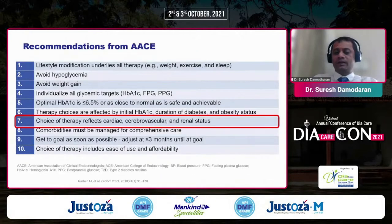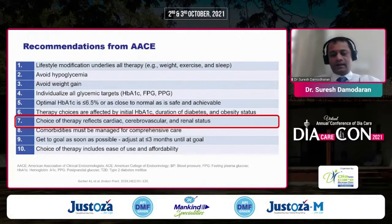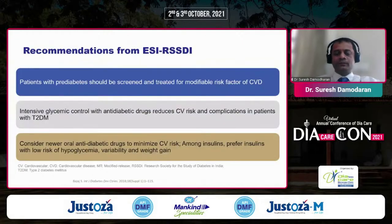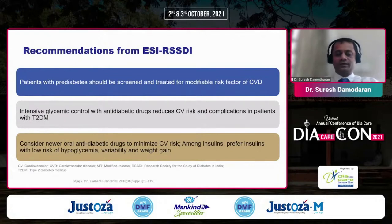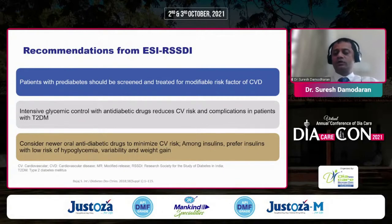ADA and EASD recommendations note that comorbidities — ASCVD, CKD, and heart failure — should all be thought about when considering drug management. The choice of therapy reflects cardiac, cerebrovascular, and renal status. ESI and RSSDI guidelines also state a patient with pre-diabetes should be screened for risk factors, intensive glycemic control should be targeted, and new drugs should be considered to minimize severe risk.